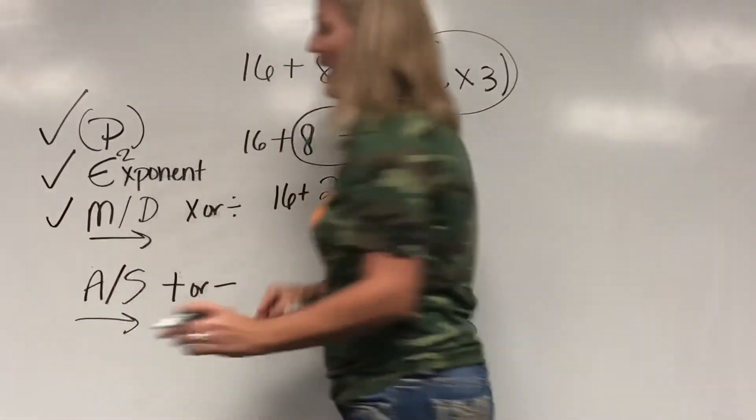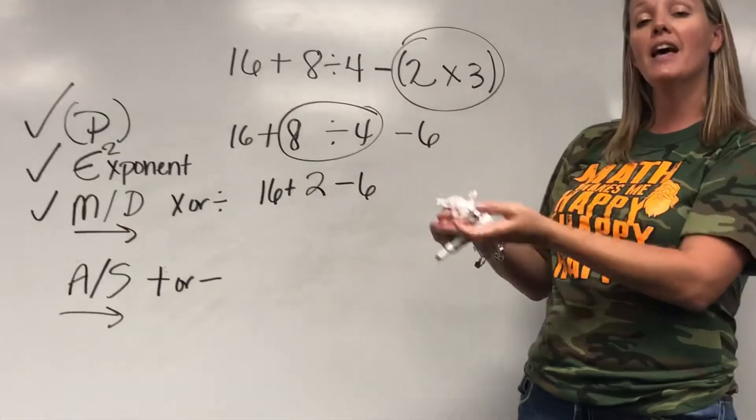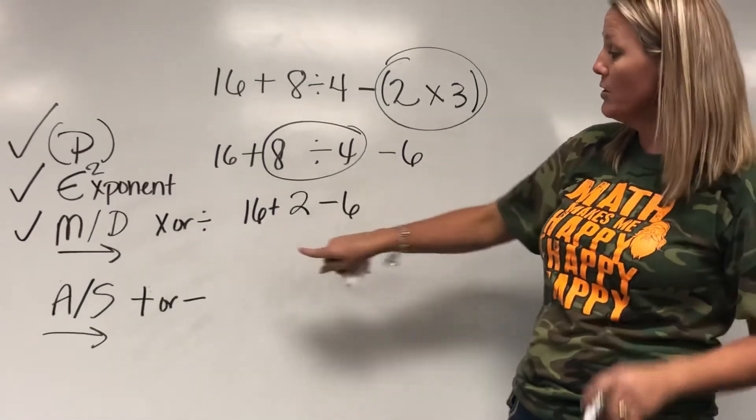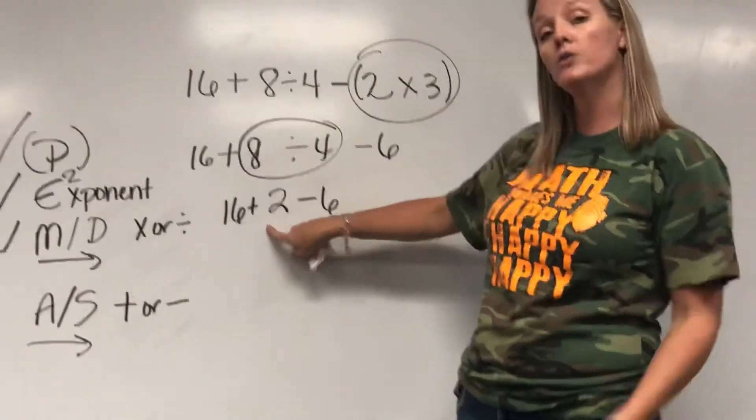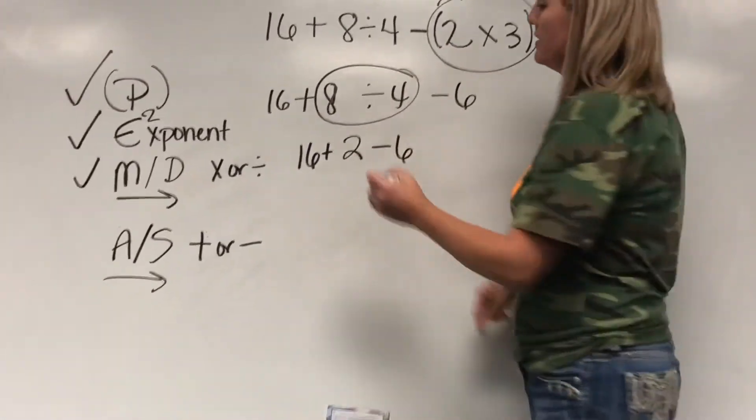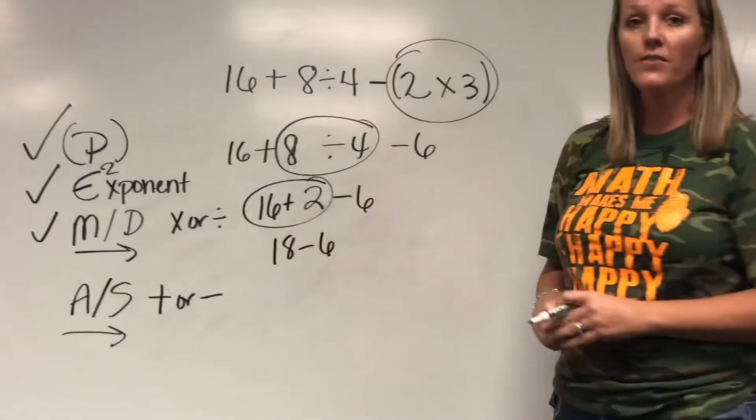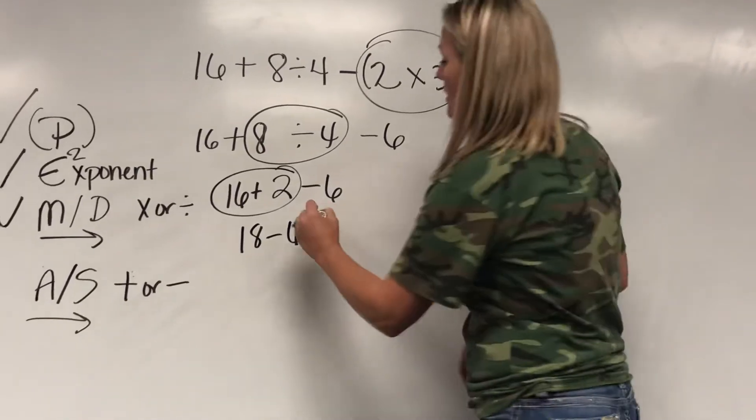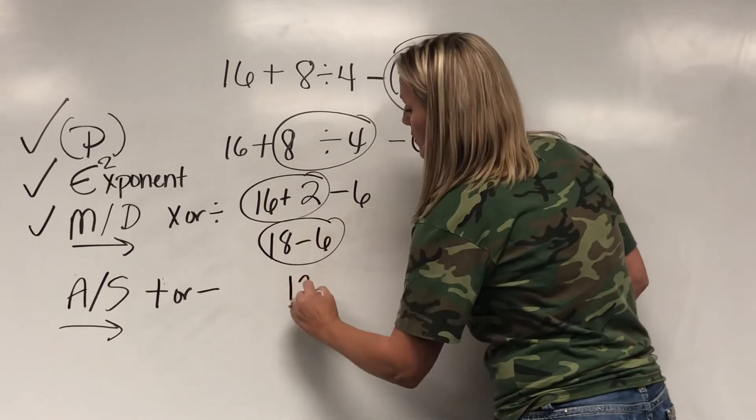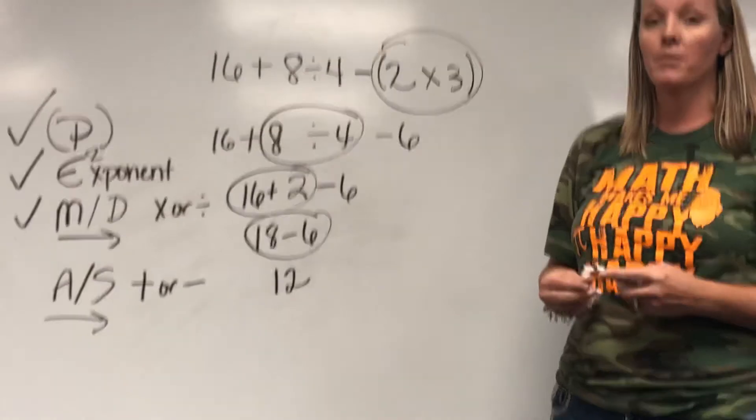Step four, add or subtract from left to right. I have addition first, so I'm going to add first. So 16 plus two gives me 18, and I have minus six left, so 18 minus six gives me 12. So I finally solved that problem.